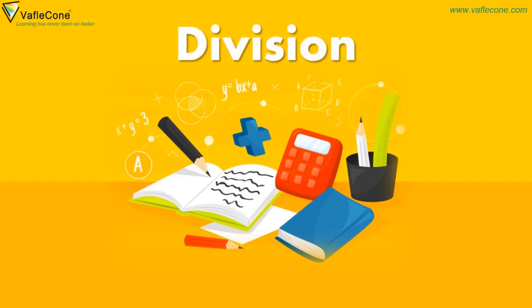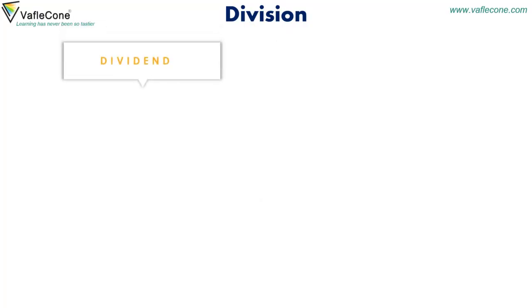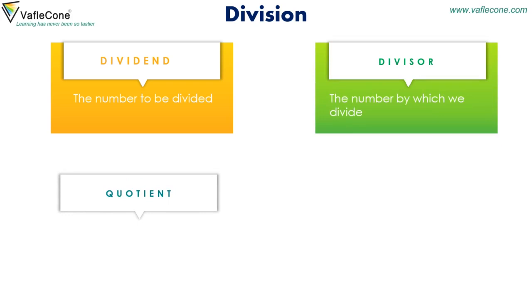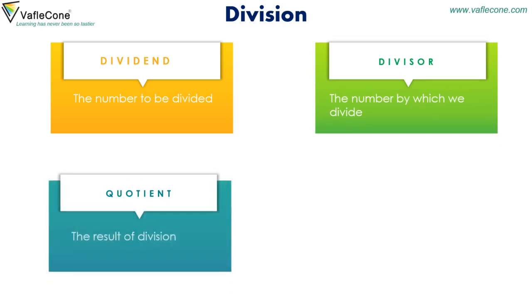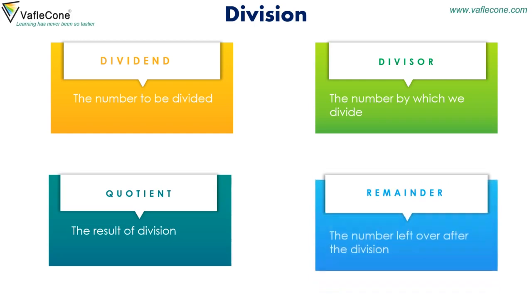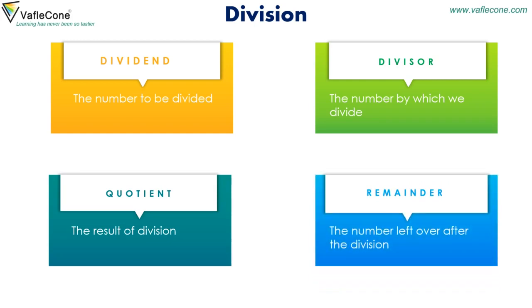Division. The number to be divided is called the dividend. The number by which we divide is called the divisor. The result of division is called the quotient. The number left over after the division is called the remainder.